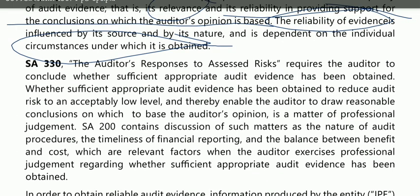ISA 330 states that the auditor's response to assessed risk requires the auditor to conclude whether sufficient and appropriate audit evidence has been obtained. This means we need to obtain sufficient and appropriate audit evidence to reduce risk to an acceptably low level, thereby enabling the auditor to draw reasonable conclusions on which to base the auditor's opinion — and this is a matter of professional judgment.